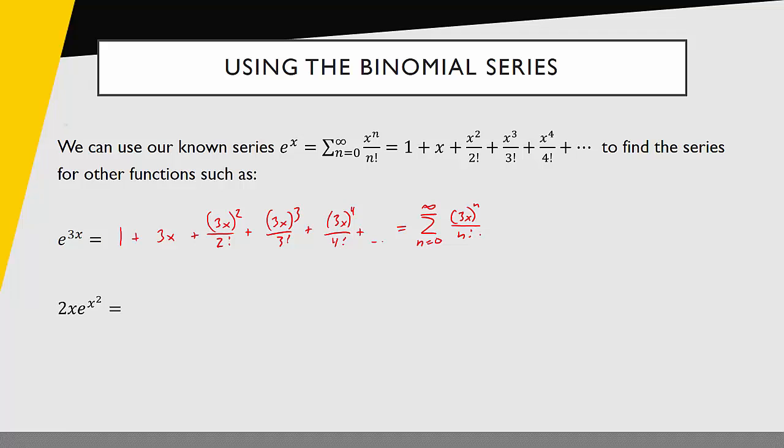Now something slightly more complicated. The next one has 2x e to the x squared. In this case we're multiplying and doing substitution. What we can do is just isolate that exponential piece, that e to the x squared, and then use the series for e to the x with a substitution to generate the series for e to the x squared. Then we'll just multiply through that general series by our 2x.